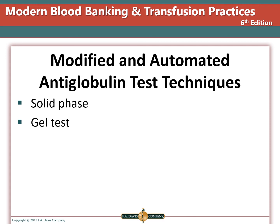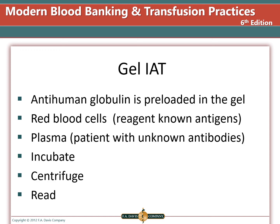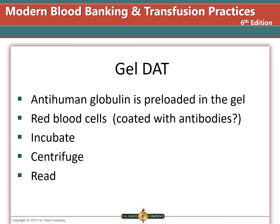Two automated methods of AHG testing performed at local laboratories include solid phase and gel technology. Solid phase uses a microtiter plate coated with either a known antigen or a known antibody. The gel test most commonly uses polyacrylamide gel that acts as a trap to prevent agglutinated cells from reaching the bottom. For the gel indirect antiglobulin test, anti-human globulin is preloaded in the gel; reagent red cells and patient plasma are added, incubated, centrifuged, and read. For the gel direct antiglobulin test, AHG is again preloaded, the patient's cells suspected of being antibody-coated are added, incubated, centrifuged, and read.